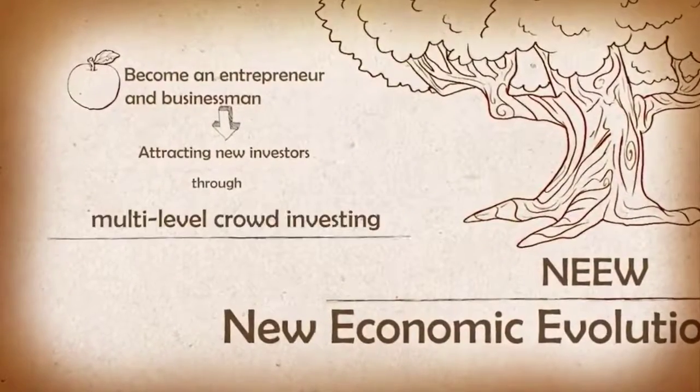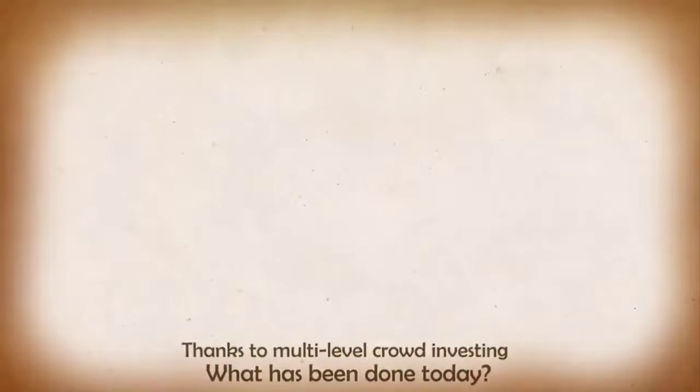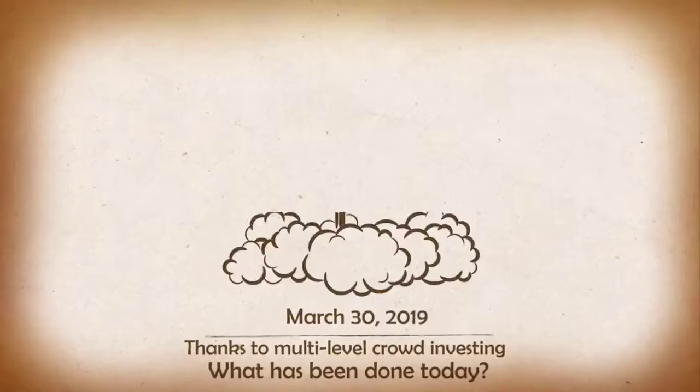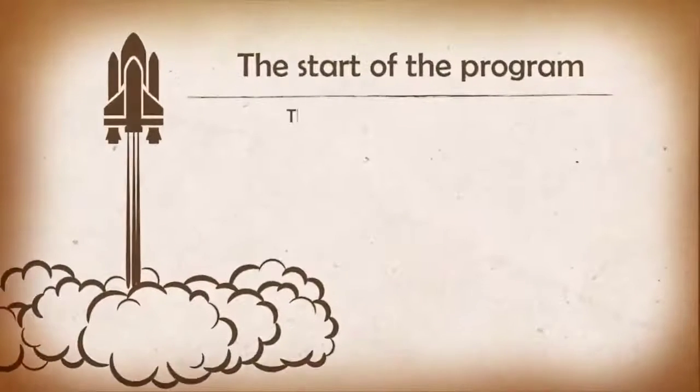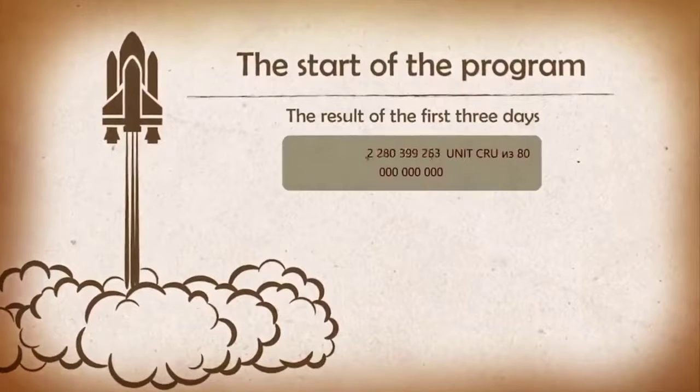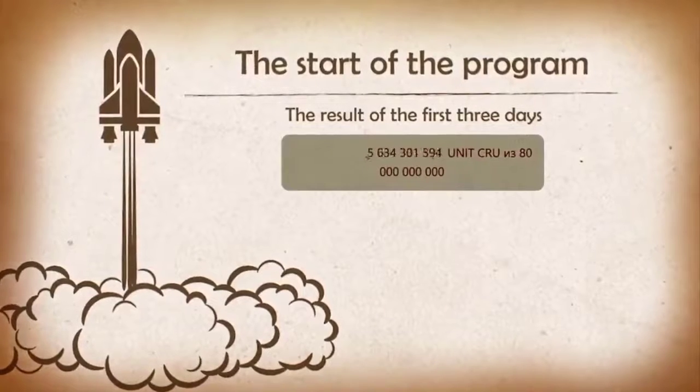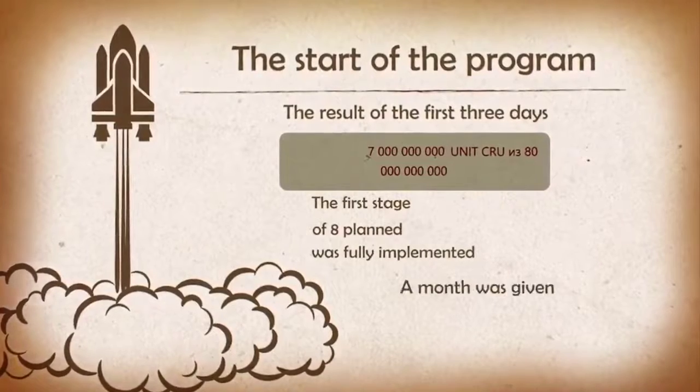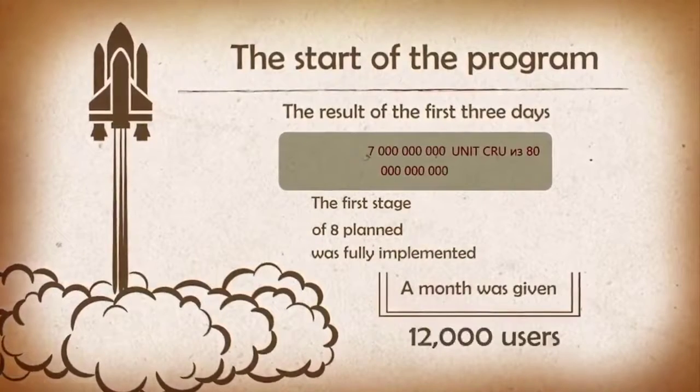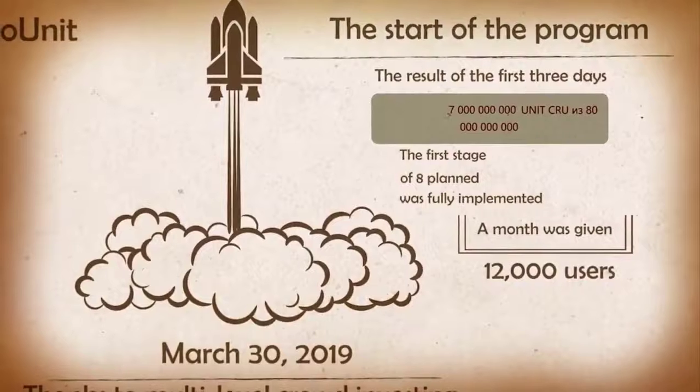What has already been done today? On the 30th of March 2019, thanks to the multi-level crowd investing, the program Crypto Units started. Its immediate result exceeded all expectations. For the first three days, the first stage of the eight scheduled was fully implemented, which was expected to take a month. Thus twelve thousand users were members of the program.